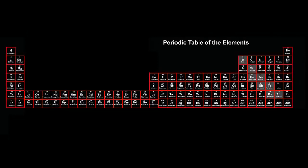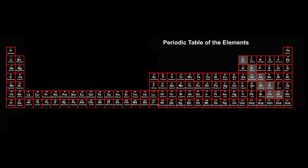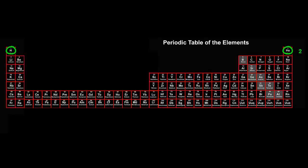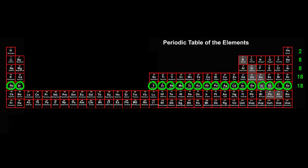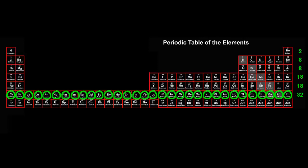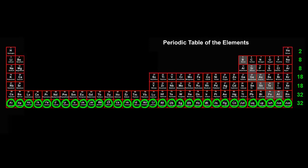This layout also makes it easier to see how many elements are in each row: 2 in the first row, 8 in the second, 8 in the third, 18 in the fourth, 18 also in the fifth, 32 in the sixth, 32 in the seventh.